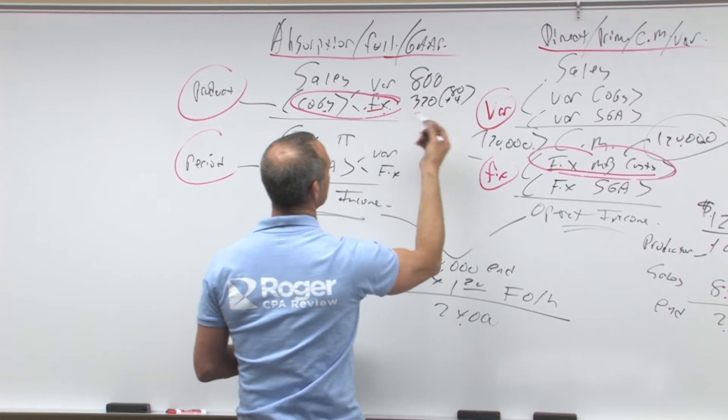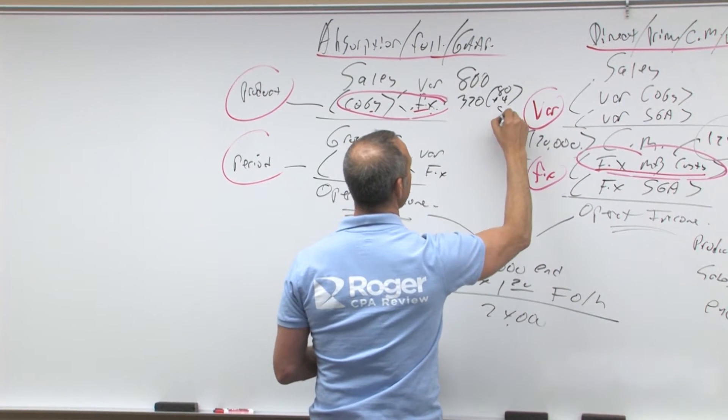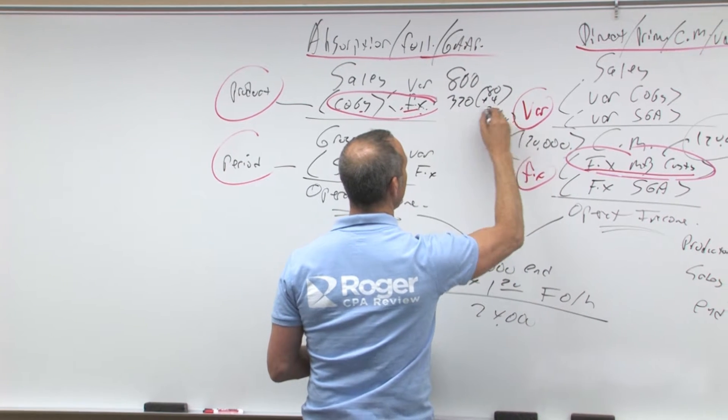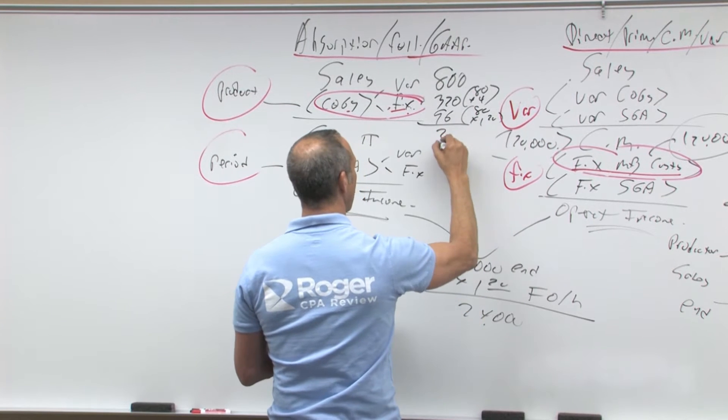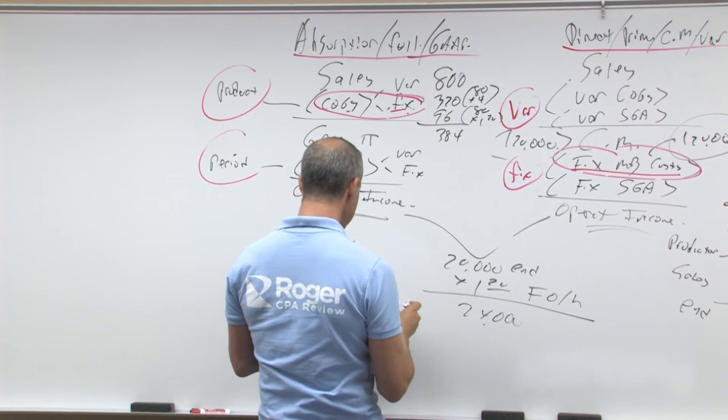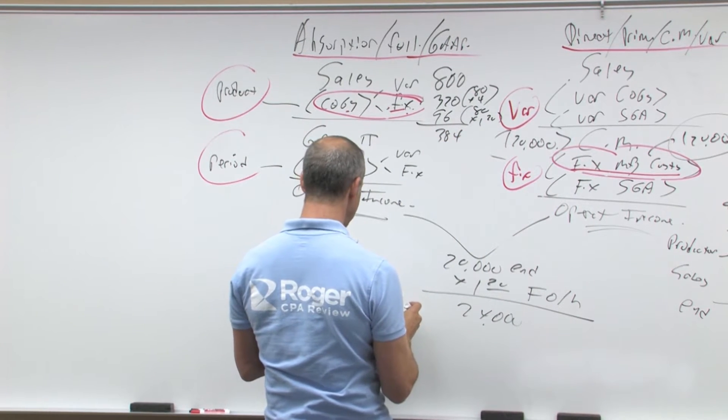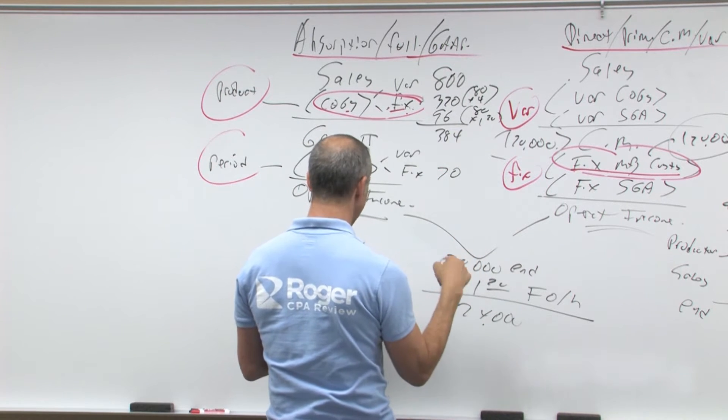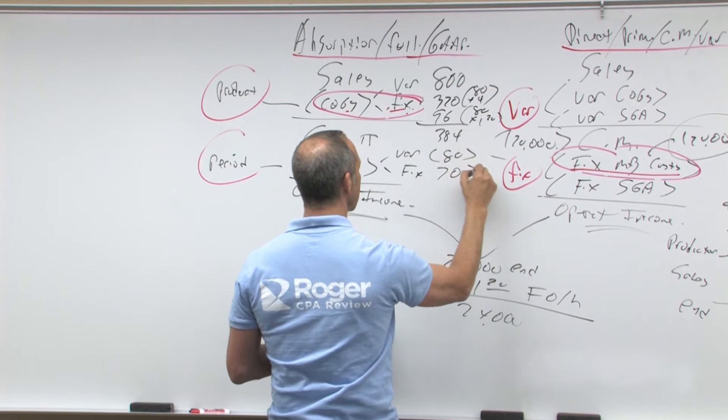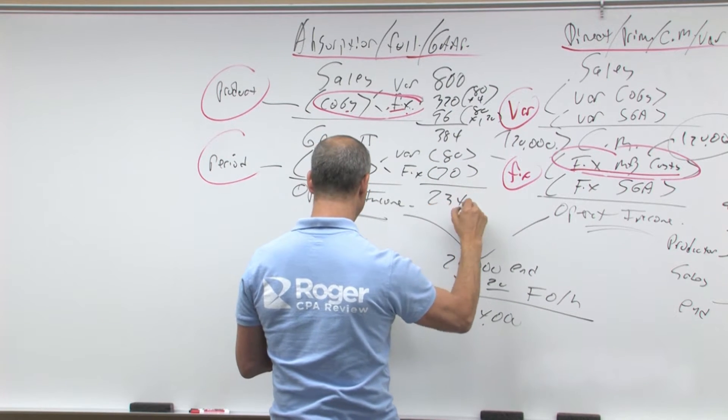My fixed cost of goods sold, we said, was 80 times a dollar 20, which is 96. That gives me 384. My variable SG&A, my fixed SG&A, we said fixed was 70, variable was a dollar times 80 is 80. That gives me profit of 234.